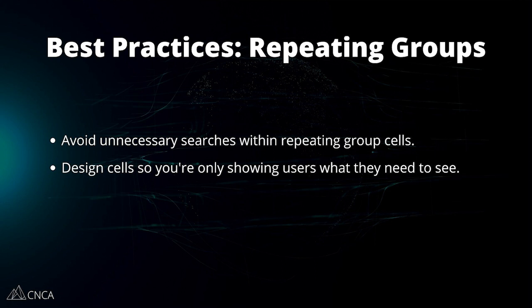Next, let's talk about repeating group structures. Repeating groups are a type of element that are so flexible you have many different ways of designing lists — you want to be very careful because you can really hurt your performance or help it. Avoid doing database searches inside repeating group cells whenever you can, because that multiplies with every cell. If you can, store the information you need in a separate field within a database record, use custom states, or use contained list fields if possible. Also take a look at how many rows and columns you're having Bubble load at one time and what your paging system looks like if the repeating group is loading lots of items at once.